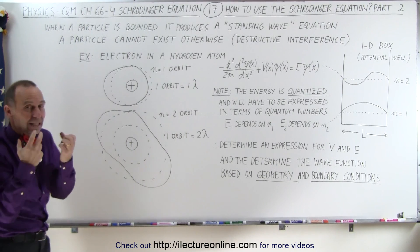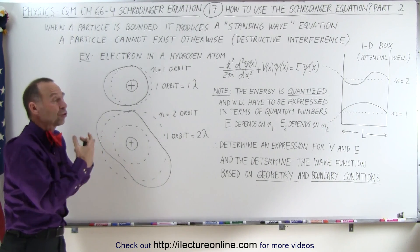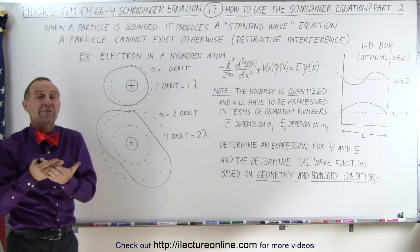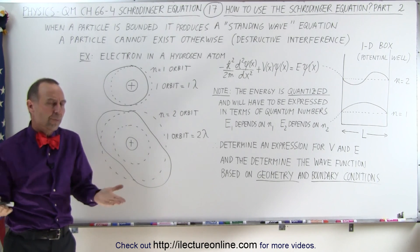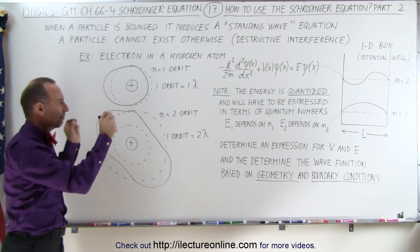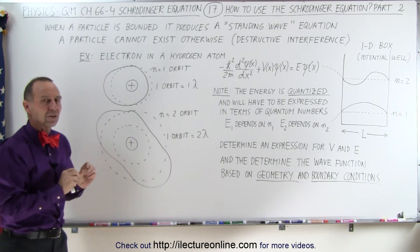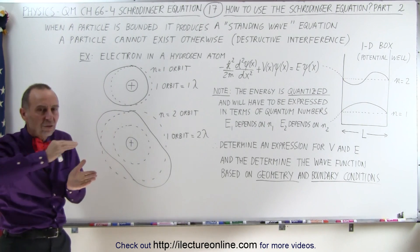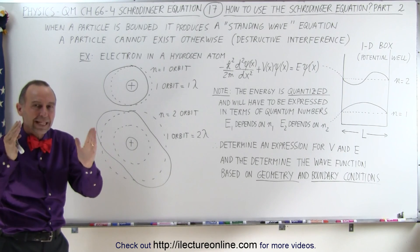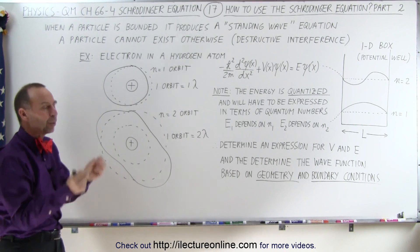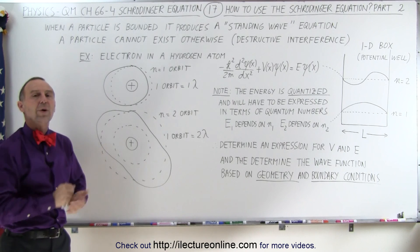So hopefully that gives you the context of how we utilize the Schrödinger equation to come up with the wave equation and the probability function of a particle. We really have to look at the physical conditions of where the particle is at, look at the boundary conditions, look at the possibility of how a wave can exist within that physical limit, and that will then help us determine the wave equation.